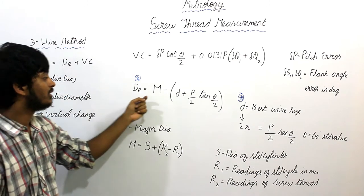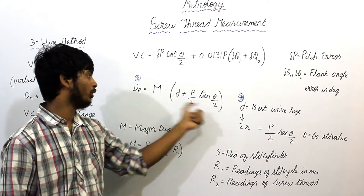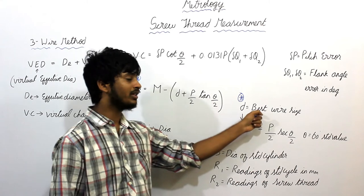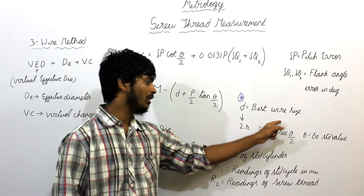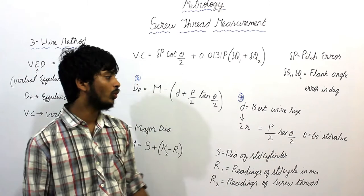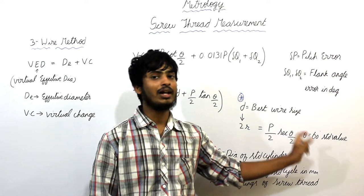And effective diameter is M minus d plus P by 2 tan theta by 2, where M is major diameter and this small d is best wire size. It is given as P by 2 tan theta by 2, where this theta value is 60 degrees. It is standard value.